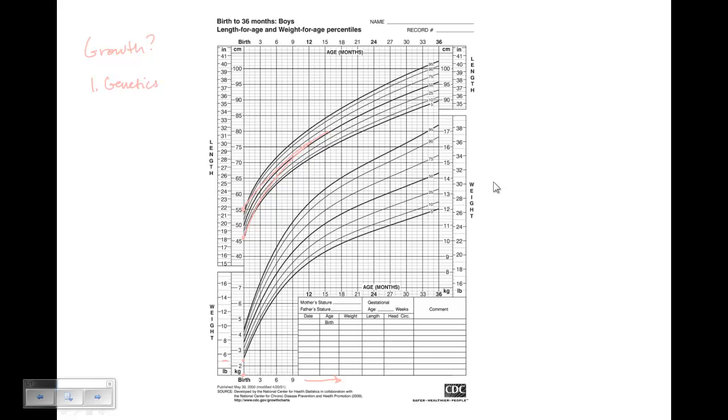Genetics is an important determinant. We can actually do a calculation of where we think a child should end up, the so-called mid-parental height, which we are going to talk about later. So genetics is the critical factor, but whether or not you reach your genetic potential means that the cards have to be lined up appropriately.